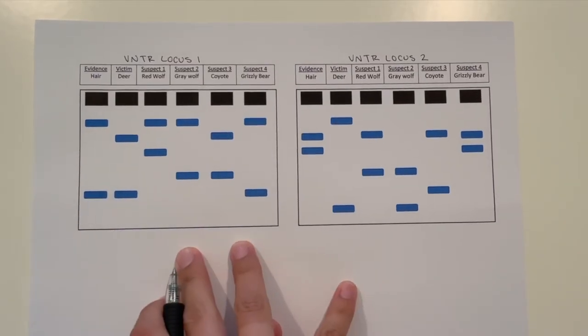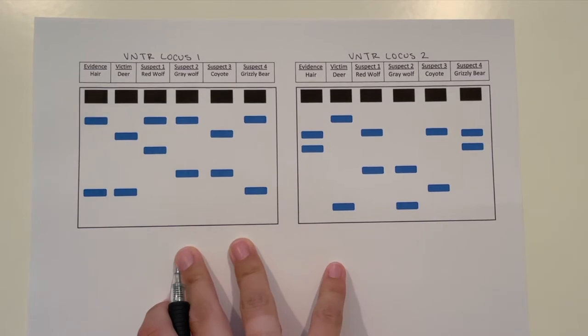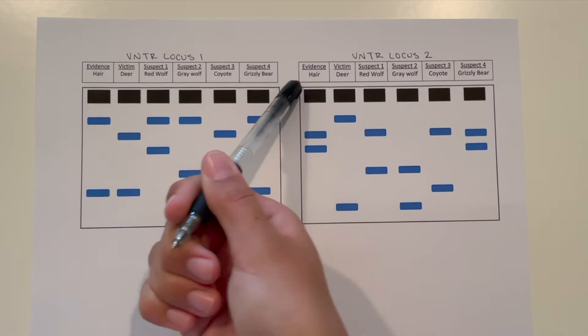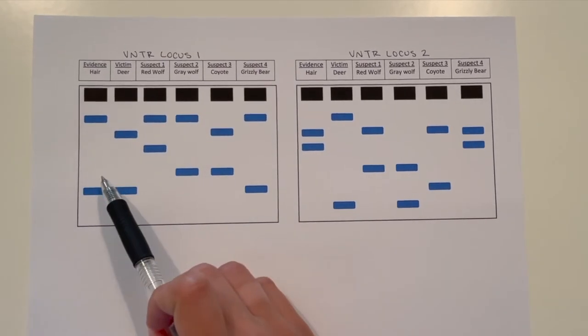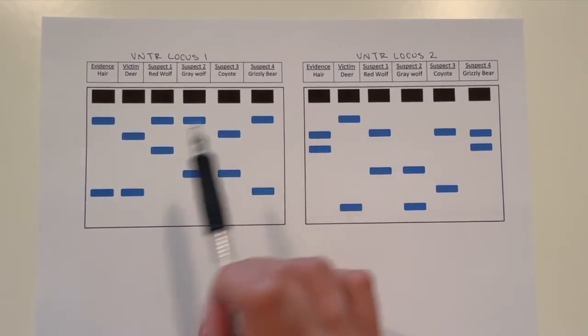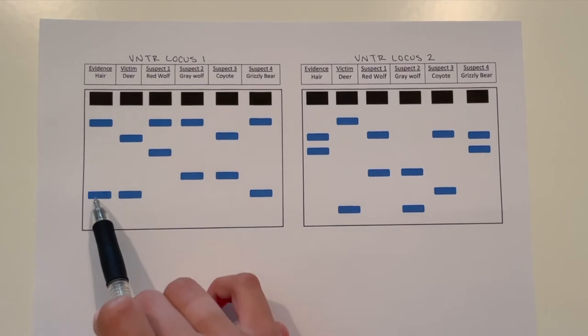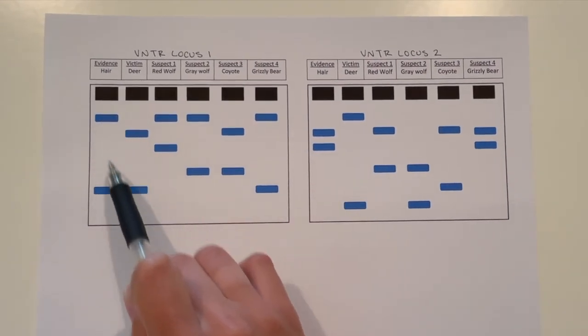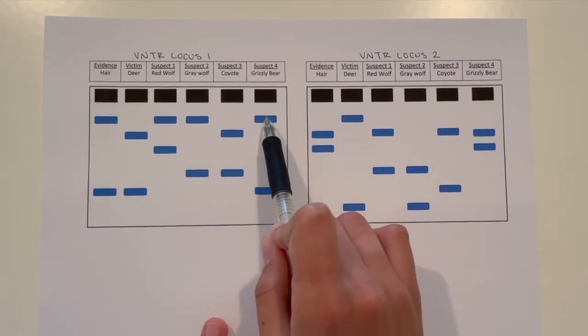Here are the two VNTR loci for the evidence at the crime scene. We have the evidence hair found at the crime scene, victim, and the four suspects. So we're going to determine which one of the suspects or the victim left the hair, and we do that by matching up the evidence loci with one that has to have both of them.